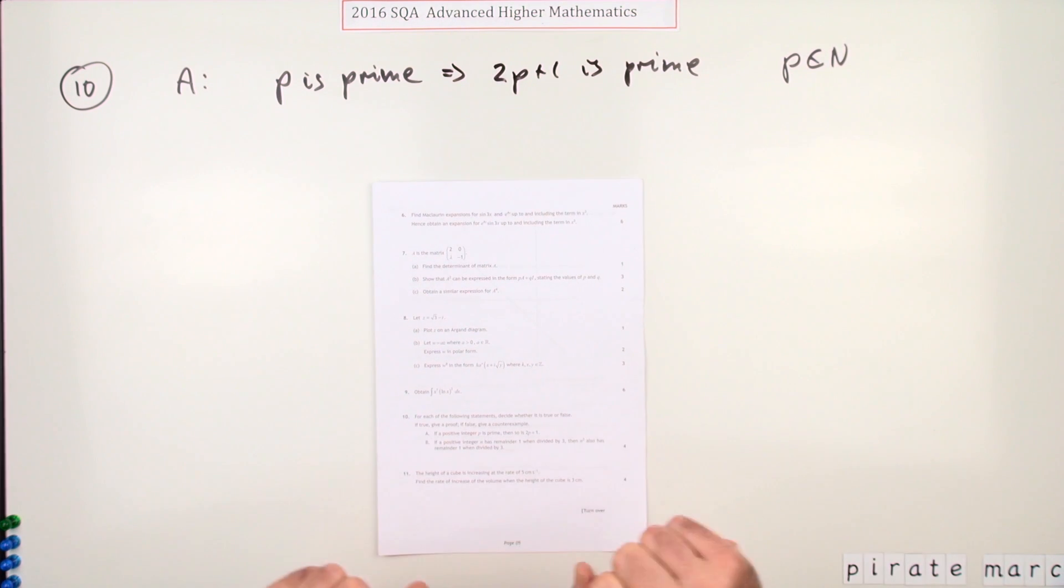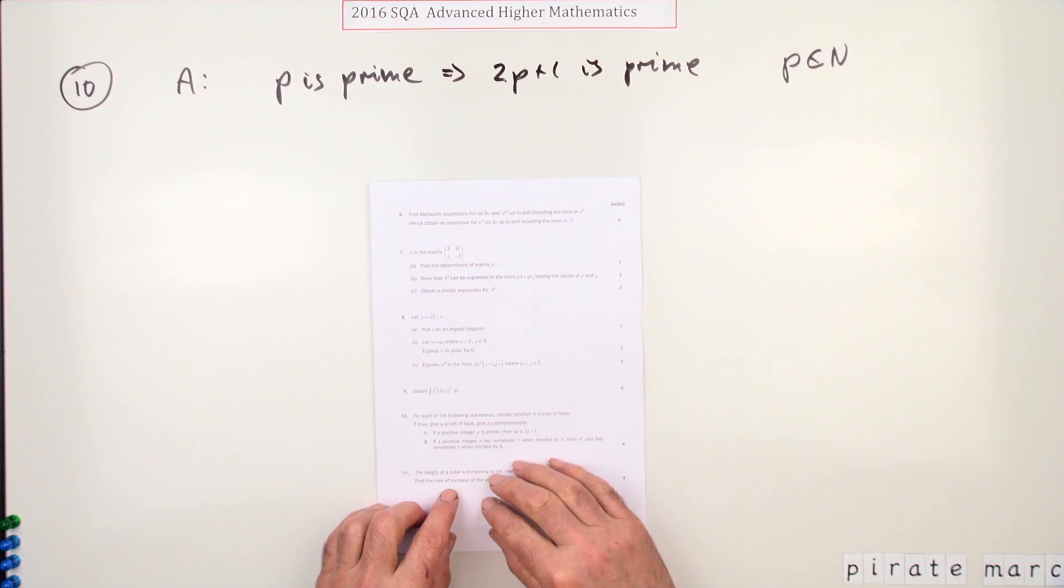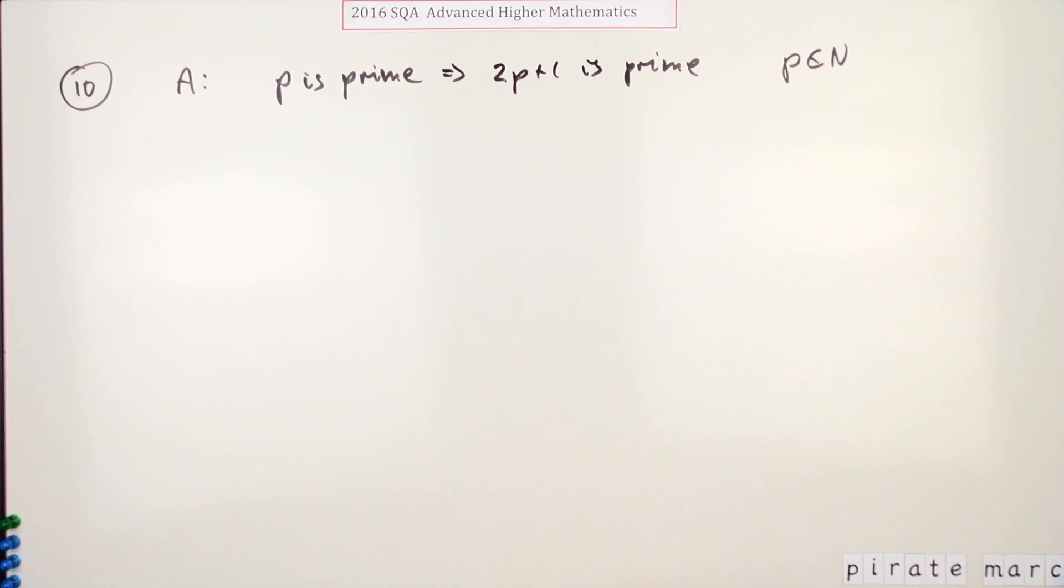Number 10 from the 2016 advanced higher maths. The proof question for four marks, two statements. If it's true, prove it; if it's false, give a counterexample. But what's first of all?